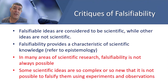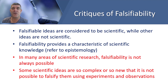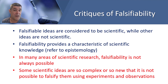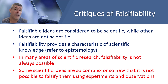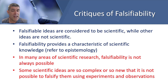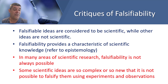What should we say about the critics of falsifiability? The falsifiability approach of Popper depicts a clean delineation between falsifiable ideas and those that are not. Falsifiable ideas are considered to be scientific, while other ideas are not scientific. Since the basic tenets of intelligent design and astrology cannot be falsified, these areas are not regarded as being science. However, in many areas of scientific research, falsifiability is not always possible — and in some respects, astrology itself has falsifiable aspects.